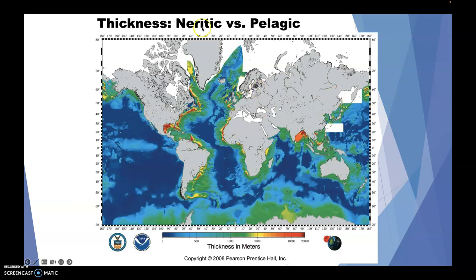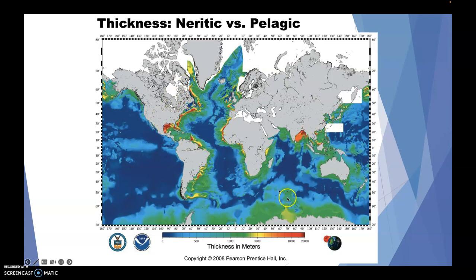This is a map looking at neritic versus pelagic deposits — the warmer colors indicating a thicker deposit and the cooler colors indicating a thinner thickness. I would suggest you pause the video and consider where you see some of these thicker sediment deposits before we hit rock. Right along the coastlines is where we see the greater thicknesses of these deposits. It's a really interesting thing to point out.